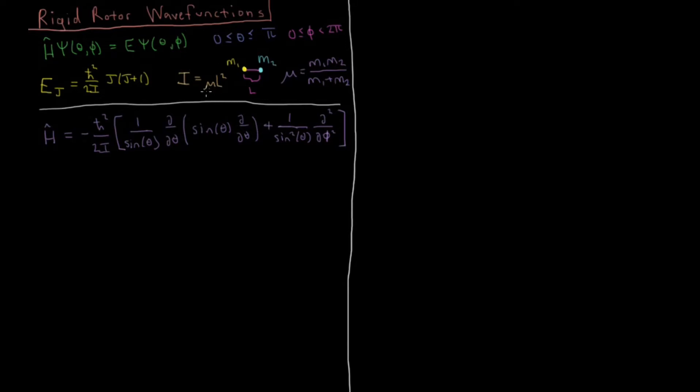The moment of inertia was mu l squared, the bond length squared times the reduced mass of these two atoms, and reduced mass is the product of the masses divided by their sum.